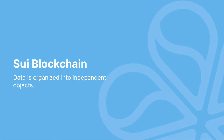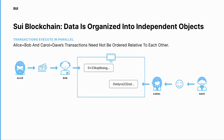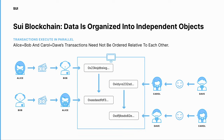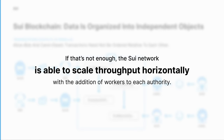The Sui blockchain works in a different manner. Data is organized into independent objects, which implies that transactions can execute in parallel. In the Sui blockchain, Alice and Bob and Carol and Dave's transactions need not be ordered relative to each other — independent transactions can be executed in parallel. And if that's not enough, the Sui network is able to scale throughput horizontally with the addition of workers to each authority.